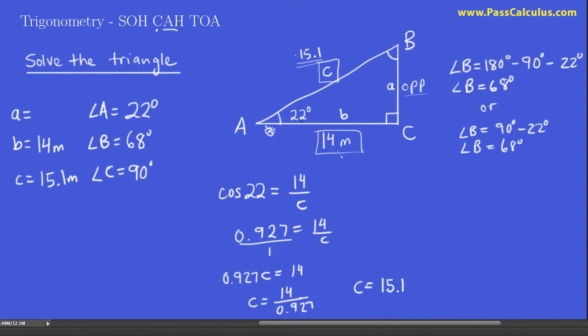So let's find side a using the 22 and the 14. When I look from the 22 degree angle, this is my opposite side and this is my adjacent side. I want to use the trig function that involves O and A, which is tan. So tangent of the angle I'm looking from, tan 22, is the opposite side, a, over the adjacent side, which is 14.